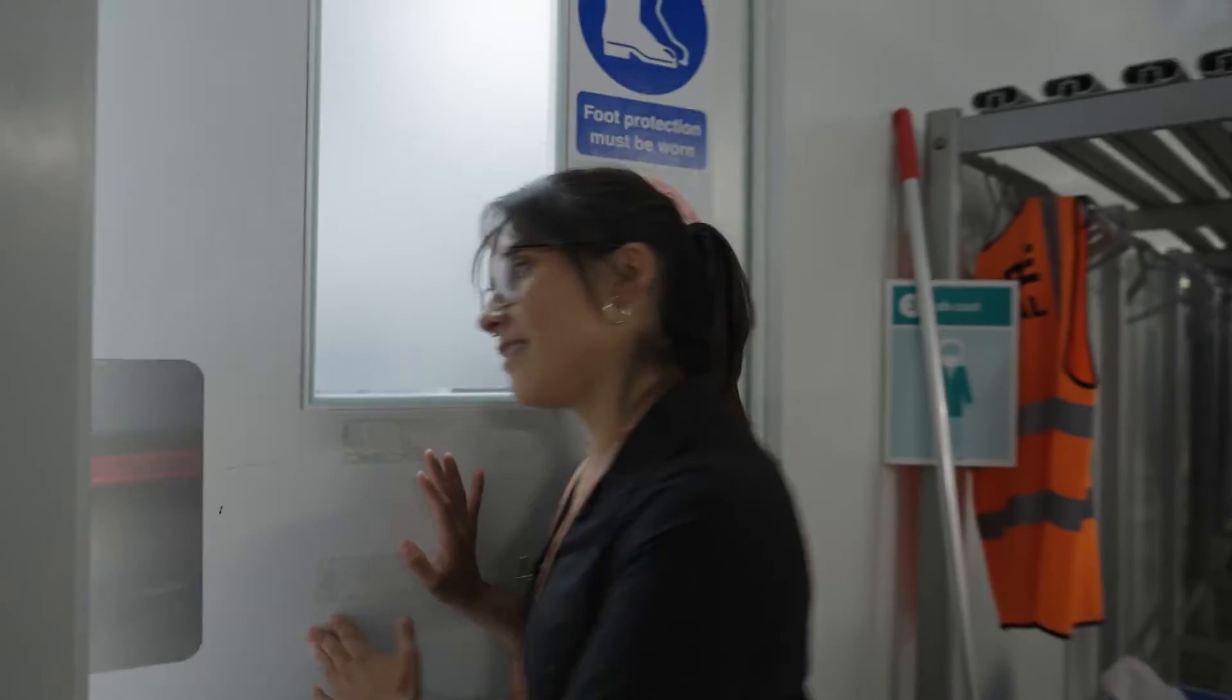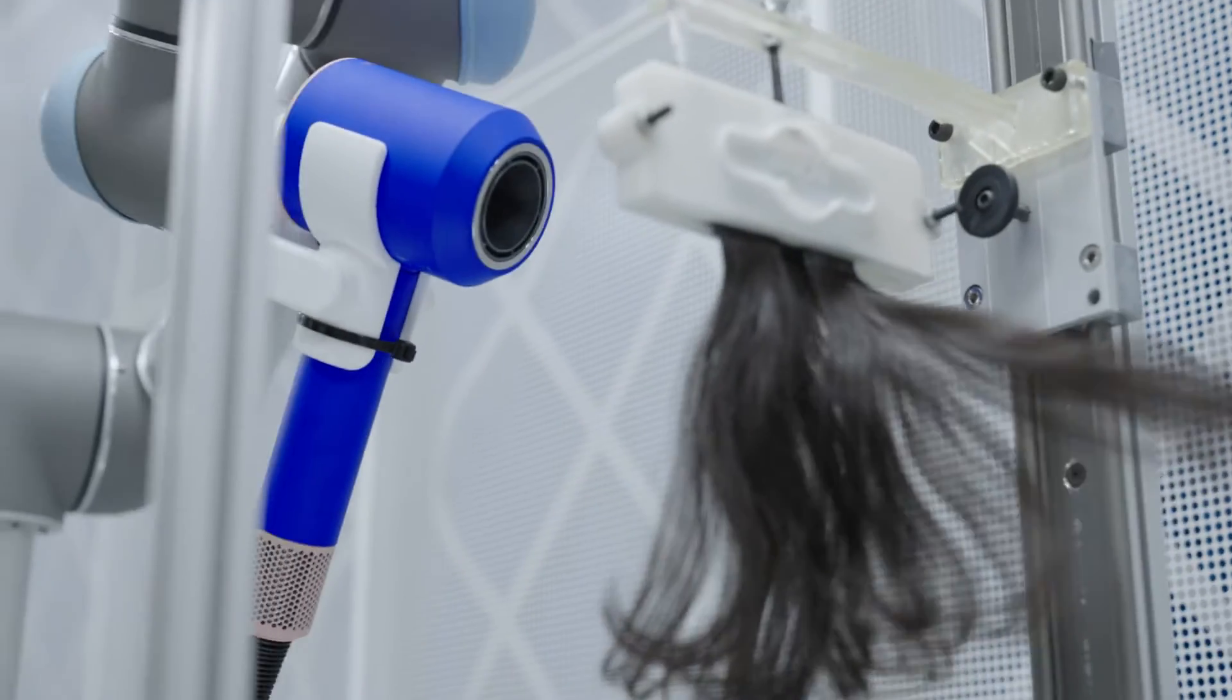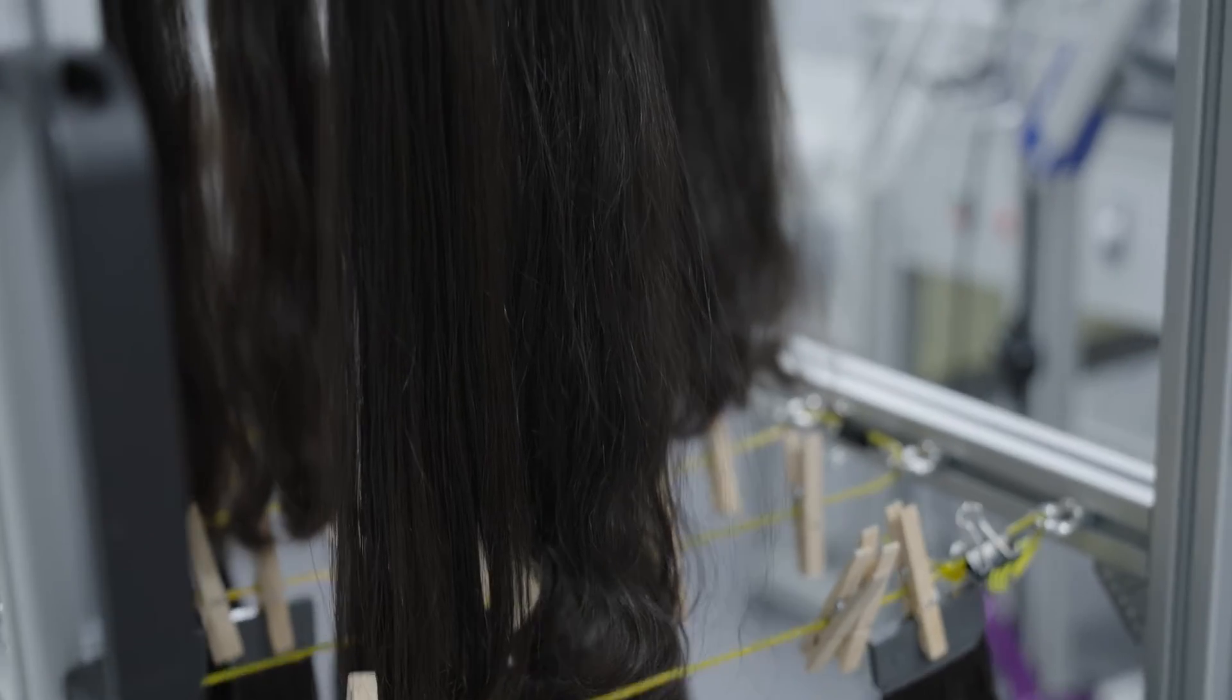So now we're going to go to the hair performance lab. This is where we actually put products to the test. It's always 23 degrees and 50% relative humidity, and we try to test it in as many hair types as possible.